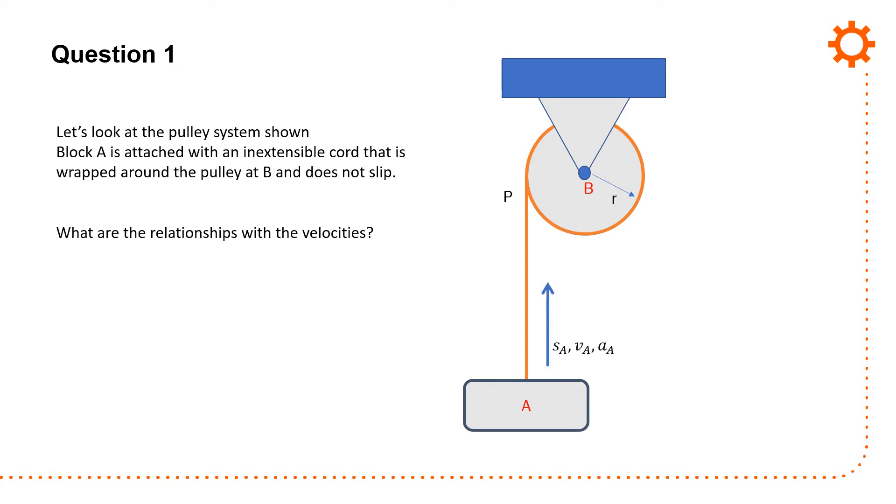Now I know that sA, vA, acceleration aA are all going to be upwards. I'm assuming that the rotation is in this direction. Theta, which is the angular position, omega the angular velocity, and alpha the angular acceleration are defined as being clockwise. I have acceleration normal in the direction towards the center of curvature, in this case the circle which is point B, and acceleration tangential which is acting along the circumference of the pulley. And I have to define my normal tangential system.